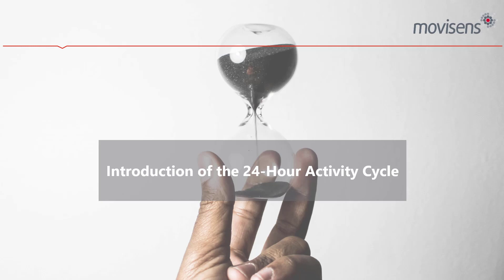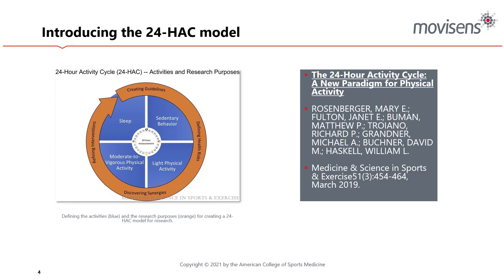So, introduction of the 24-hour activity cycle. In March 2019, in Medicine and Science in Sports and Exercise, there was a publication called 'The 24-Hour Activity Cycle: A New Paradigm for Physical Activity.' The researchers Rosenberger, Fulton, Buhmann, Troiano, Garandner, Bouchner, and Haskell came up with this model of mapping the 24-hour activity cycle and defining the different activities that comprise it.